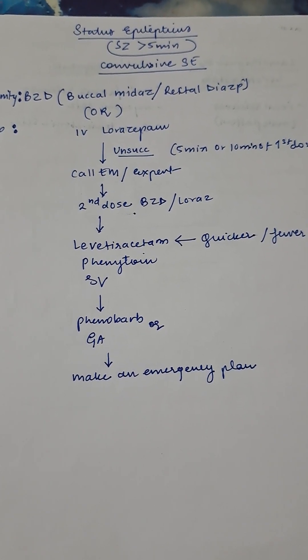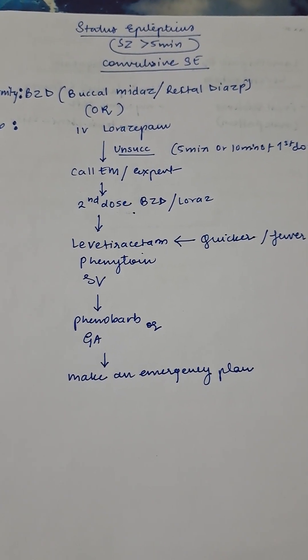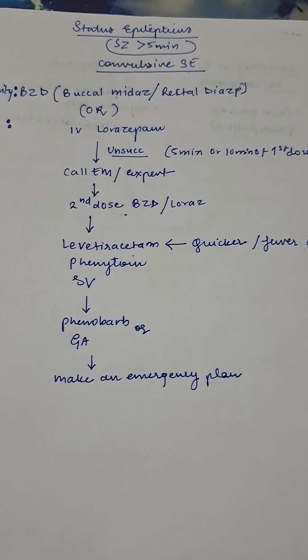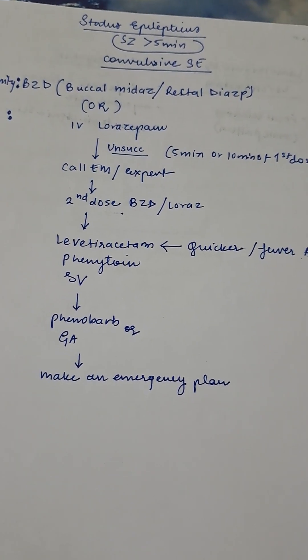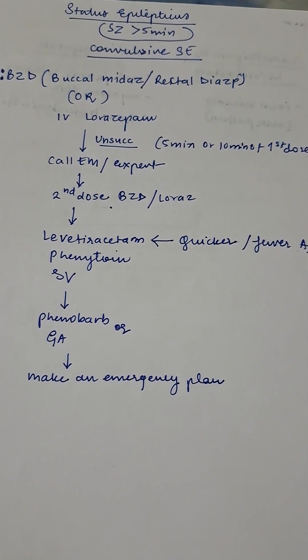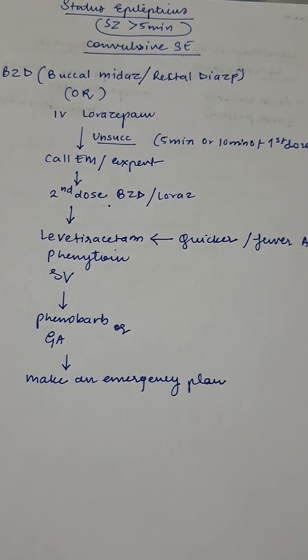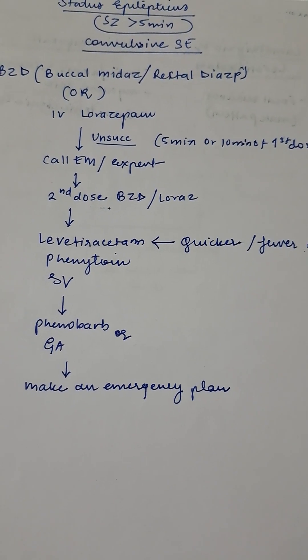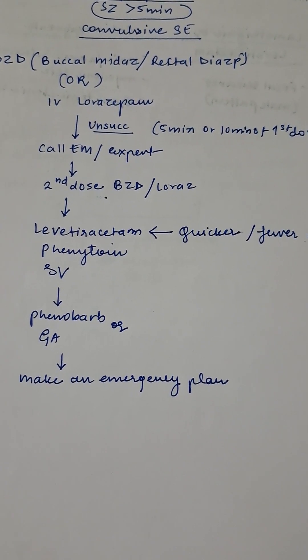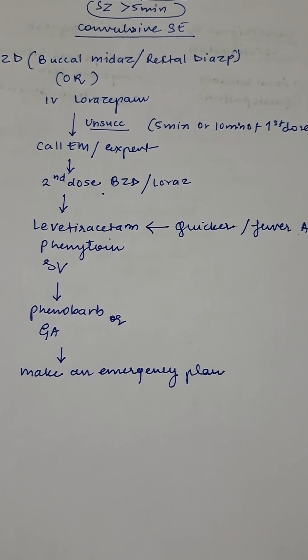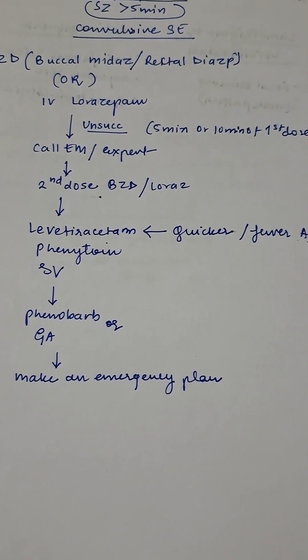While treating status epilepticus, you have to be aware of the possible underlying causes including hypoglycemia, eclampsia, and alcohol withdrawal, which may need to be treated with additional medication. Be alert to non-adherence of anti-seizure medication, which can also cause status epilepticus. Also, there can be non-epileptic seizures like dissociative seizures that can be similar in presentation to convulsive status epilepticus.